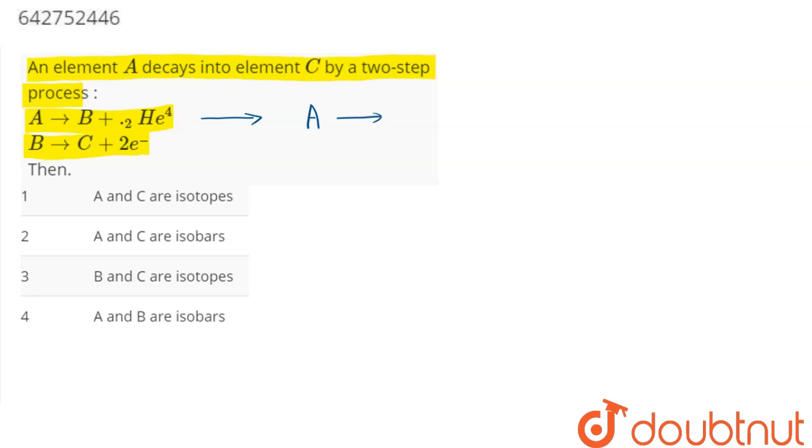Here, A decays to B plus helium alpha particle given as 4,2 helium. So we can say here, if this has mass number as A, atomic number as Z...